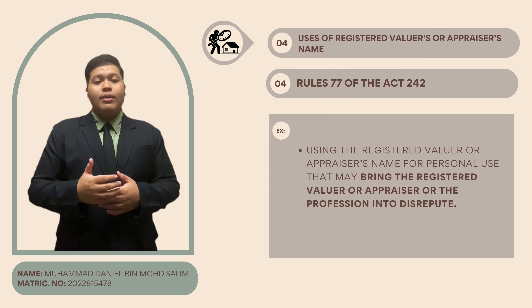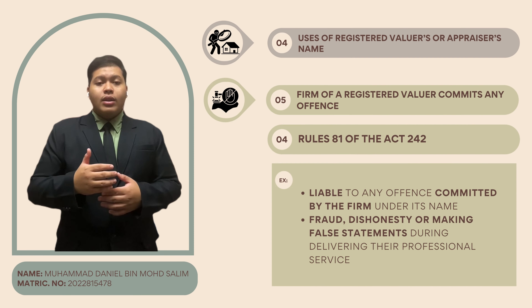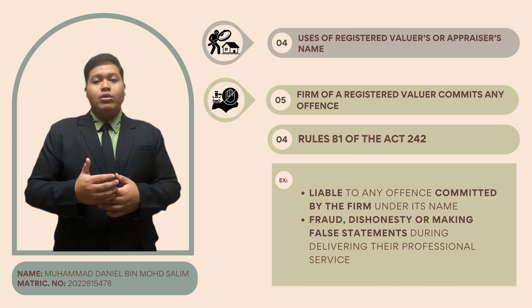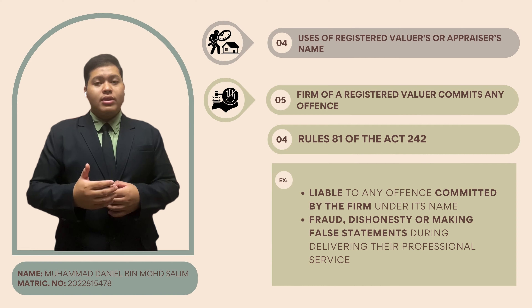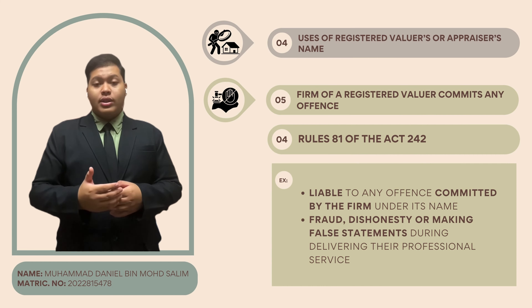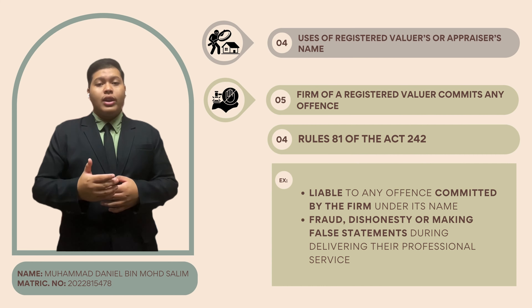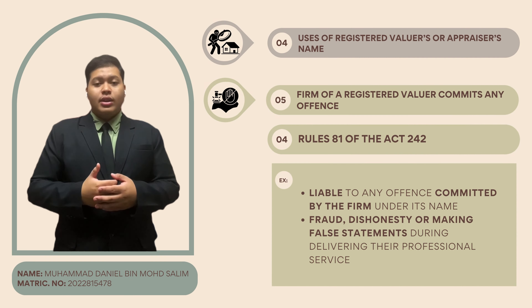And lastly, firm liability for offenses. Rule 81 holds a firm accountable for any offenses committed. If a firm under a registered valuer's supervision commits fraud or dishonesty, both the valuer and the firm are jointly and severally liable. That's all for question number 6.